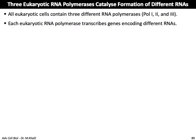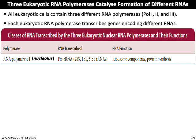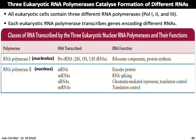In eukaryotes, there are three RNA polymerases that catalyze the formation of different RNAs. RNA polymerase I, II, and III each transcribe genes encoding different RNAs. RNA polymerase I is located in the nucleolus and is involved in the formation of ribosome components for protein synthesis. RNA polymerase II is located in the nucleus and transcribes messenger RNA, small nuclear RNAs, short interference RNAs, and micro RNAs.